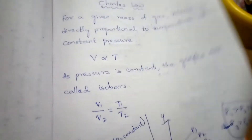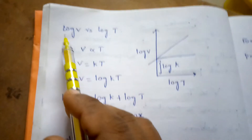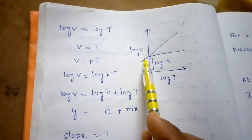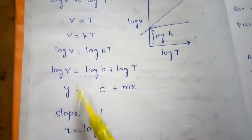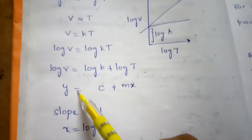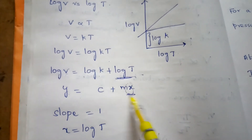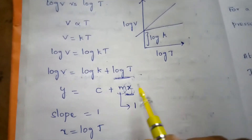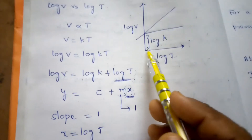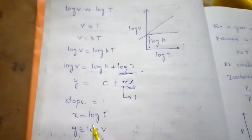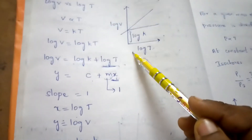Charles's law: for a given mass of gas, volume is directly proportional to temperature. For the third graph, plotting log V versus log T: since V = KT, applying log gives log V = log K + log T. This is in the form y = mx + C, where slope equals 1 (since log T has coefficient 1) and the y-intercept C = log K.